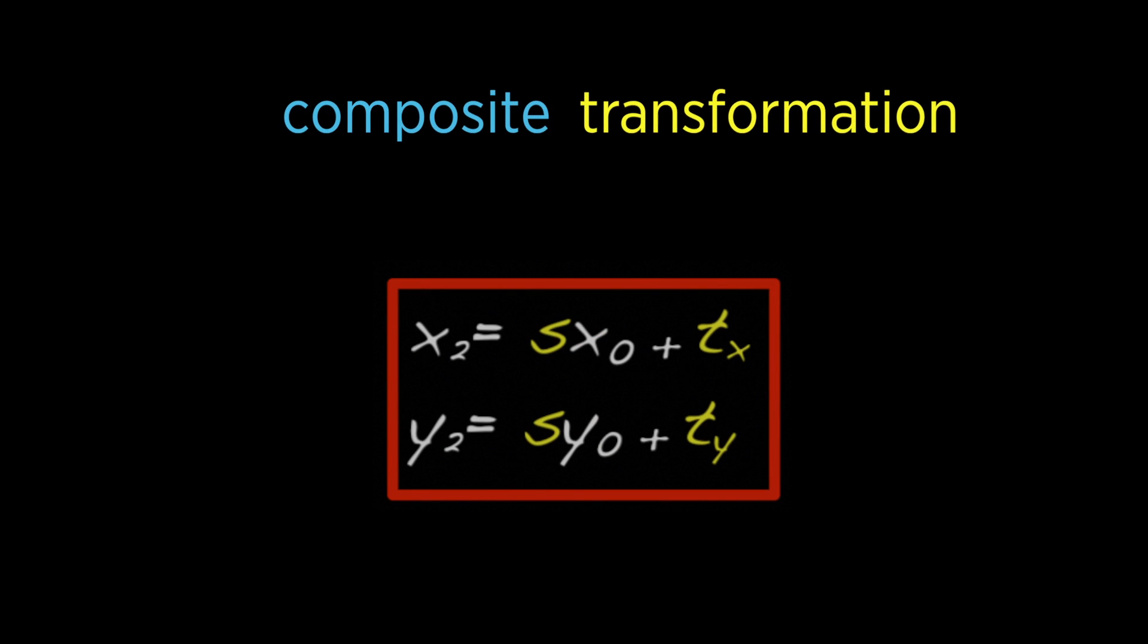In the next exercise, you'll be asked to verify that this general form for a composite transformation consisting of scales and translations always holds, no matter how many scales and translations are combined, and no matter what the order.